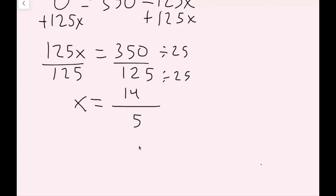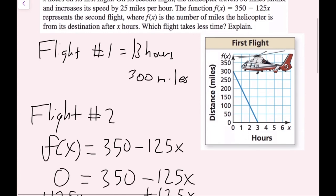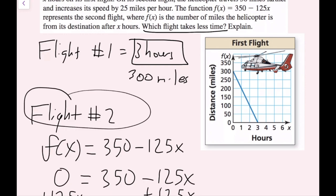Well, to compare that to three hours, which is the time that it took flight one, I want to convert this into a mixed number or into decimal form. I'm going to do a mixed number. So 5 goes into 14 twice. And then I have a remainder of 4. So the second trip only took 2 and 4 fifths hours or 2.8 hours. And if I go back up here, the first trip took 3 hours. So which flight took less time? Flight number 2. So now, since we showed our work, we are done with this one.